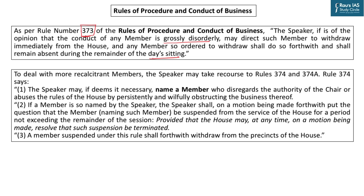For some members, such a punishment may not be too much of a deterrence, so there is a provision under Rule 374. Rule 374 says the Speaker may, if deemed necessary, name a member who disregards the authority of the Chair or is persistently and willfully obstructing the business of the House. After a motion is passed by the House, the named member can be suspended by the Speaker, and this suspension is only for the remainder of the session. Suspending an MP is serious — it cancels the representation of the whole constituency.